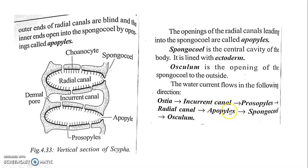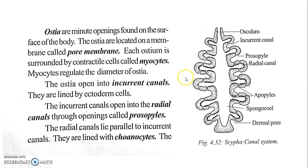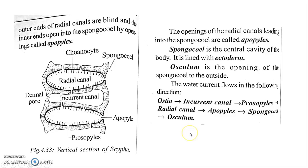Water moves from the radial canal into the spongocoel through the Apopyle. Then, from the spongocoel, water exits through the Osculum to the outside. This is the Sycon type of canal system, and it is present in the organism Sycon.